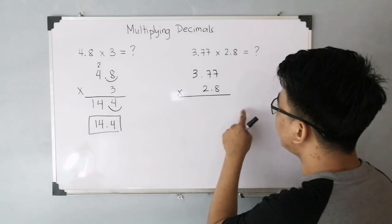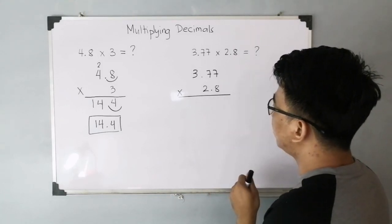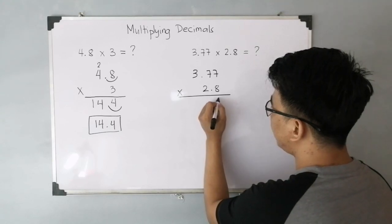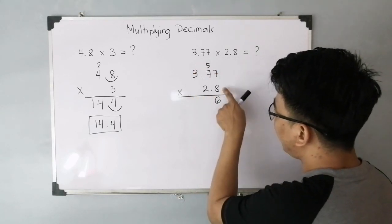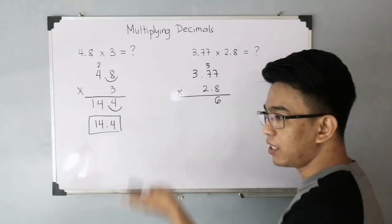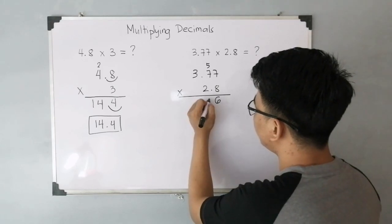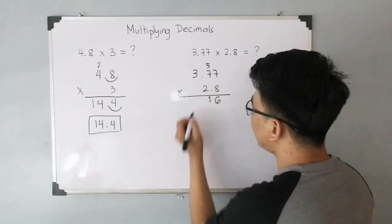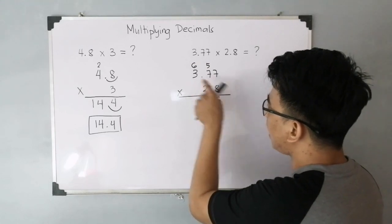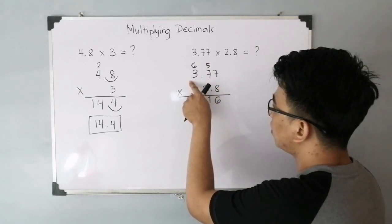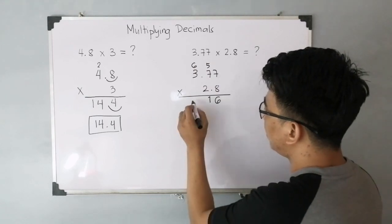So, let's multiply. You have 8 times 7. That is 56. So, you have here 6 and then carry 5. Multiply again. 8 times 7. That is 56. Plus 5. That will give you 61. So, retain 1 and then carry 6. 8 times 3. That is 24. Plus 6. That is 30.